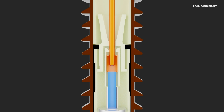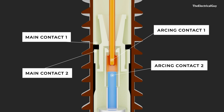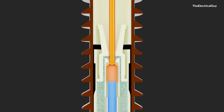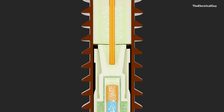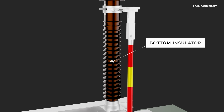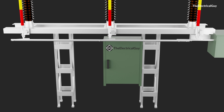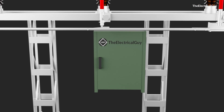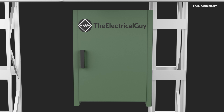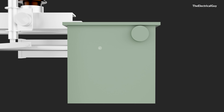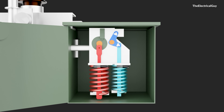Construction-wise there is no major difference. The contact system remains the same: the main contact and the arcing contact. To achieve the isolating distance, the distance between the contacts may or may not be increased depending on the design and type testing results. The bottom insulator is the support insulator required to maintain safe clearances, and then we have the support structure and the operating mechanism. Since we are providing an integrated earthing switch, a dedicated earthing mechanism is also needed to operate it, which you can see here. Let us have a look at how the operation happens.